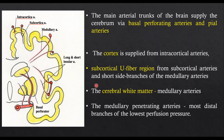Let's review the blood supply of the brain. There are two main arterial supplies: the basal perforators and the pial plexus. The pial plexus divides into three: the intracortical arteries, the subcortical arteries which supply the cortex and the subcortical U-fibers, and the medullary arteries which supply exclusively the white matter. The basal perforators supply the deep basal ganglia structures. There is a watershed zone between the supply of these two groups of arteries.